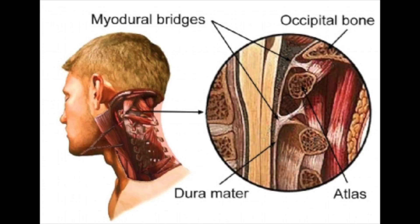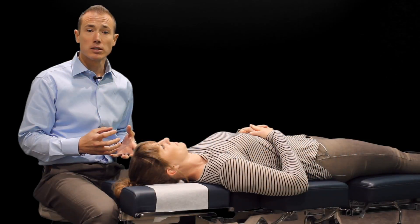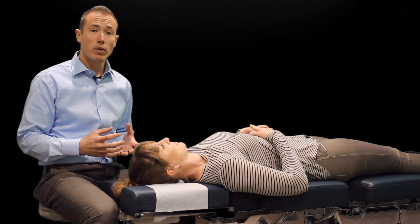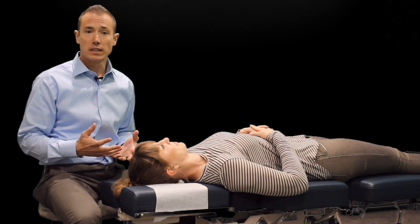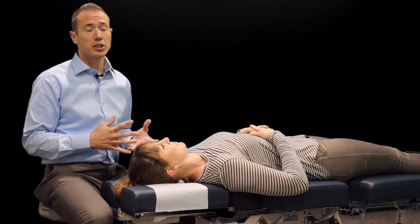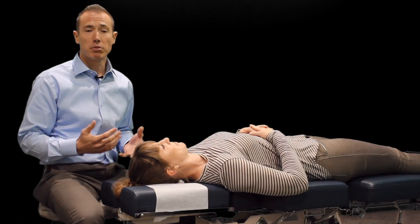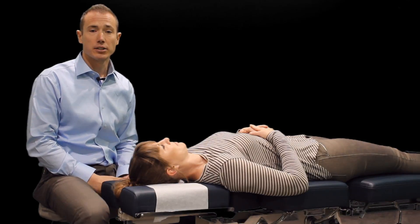Whether it's rectus capitis posterior minor and major, or the obliquus inferior, they all have myodural bridges. Active tensioning of those muscles — whether through normal physiological movement or after an injury — can have profound impacts on the dura.